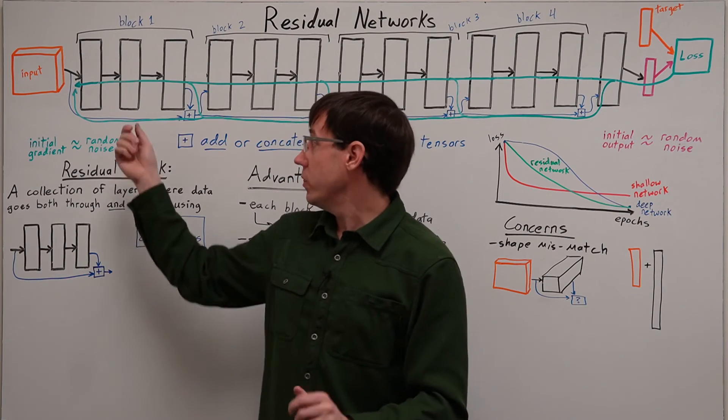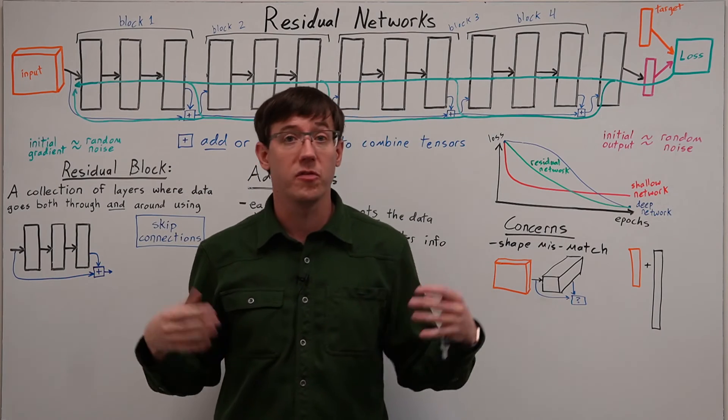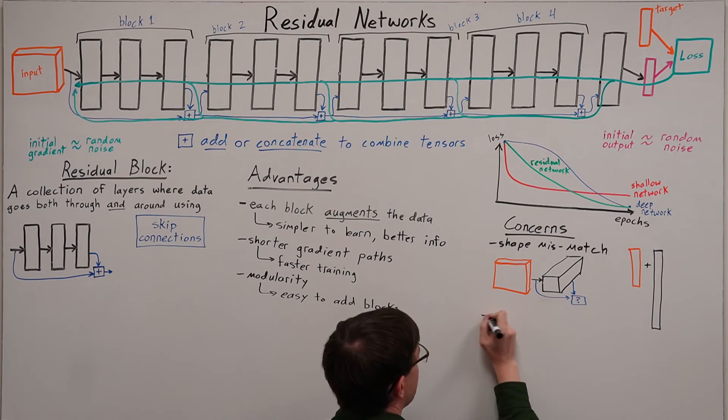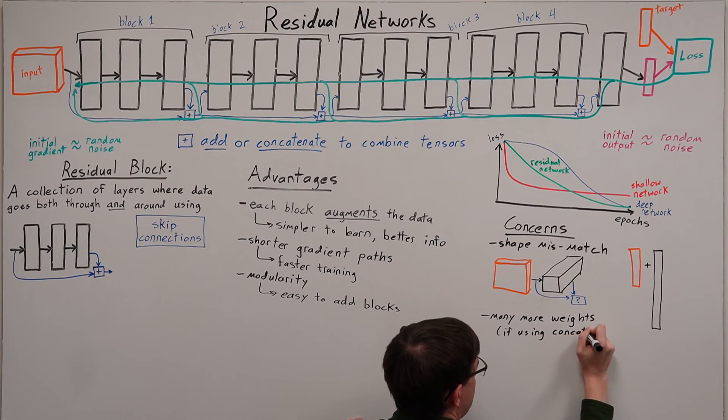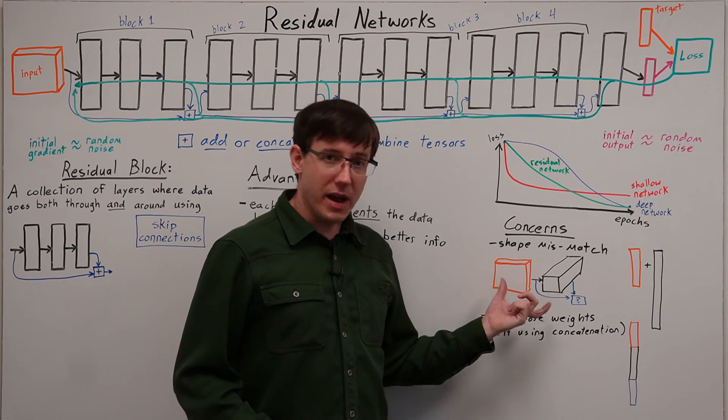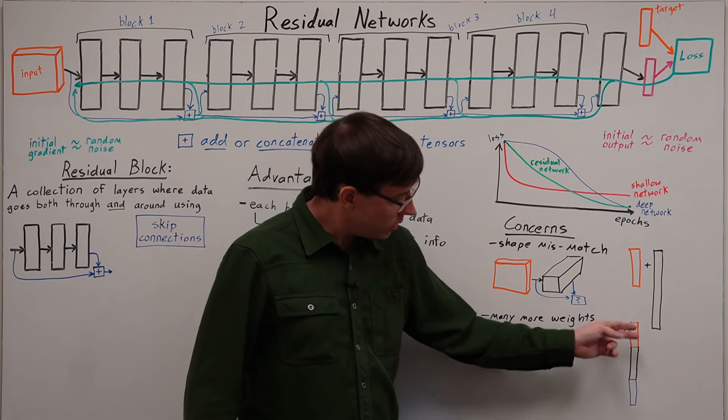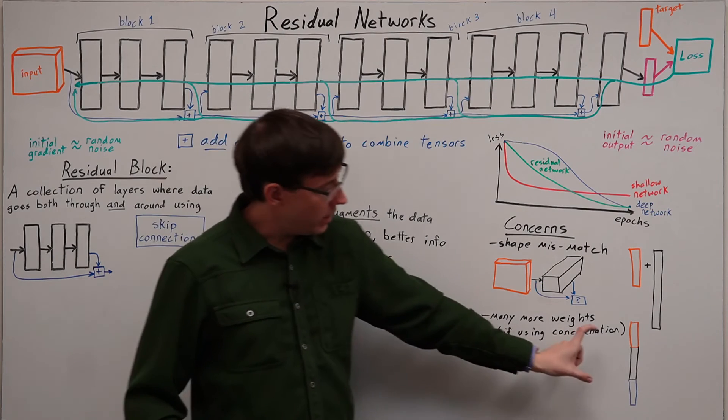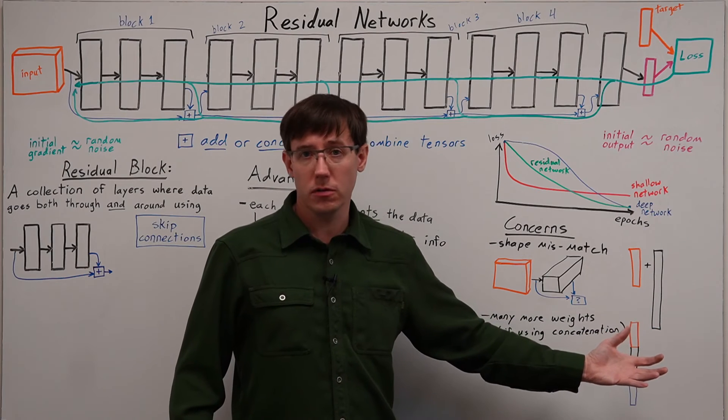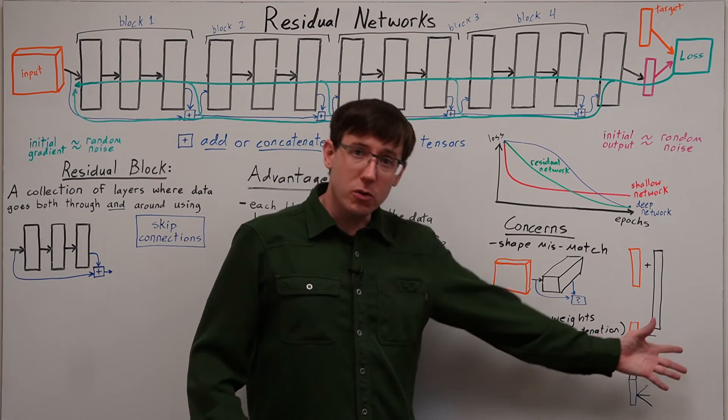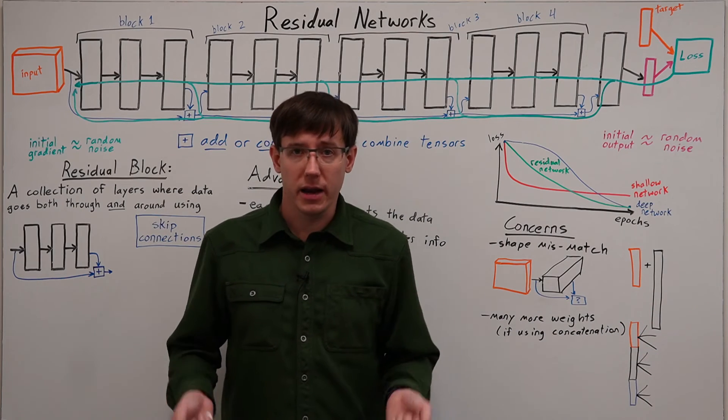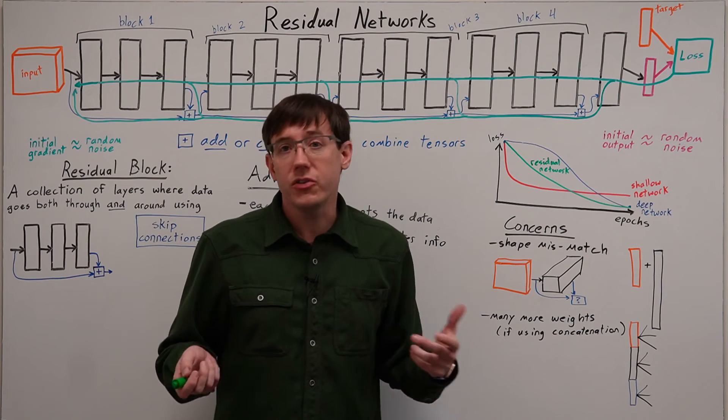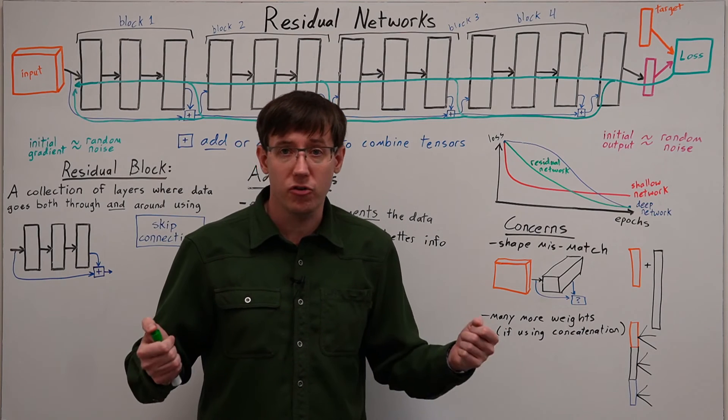Another concern is that if we use concatenation repeatedly to combine the outputs of many blocks, then we get a very, very large activation tensor and an explosion in the number of parameters. So even if the shapes match up well enough that we can do concatenation, the more times that we concatenate, the bigger this activation tensor gets, and since subsequent layers will have weights coming from each of these activations, we can end up with an explosion in the number of parameters if we overuse concatenation. And so if we are using lots of residual blocks, we should prefer addition over concatenation, and so you'll rarely see more than one or two skip connections that use concatenation in a single network.